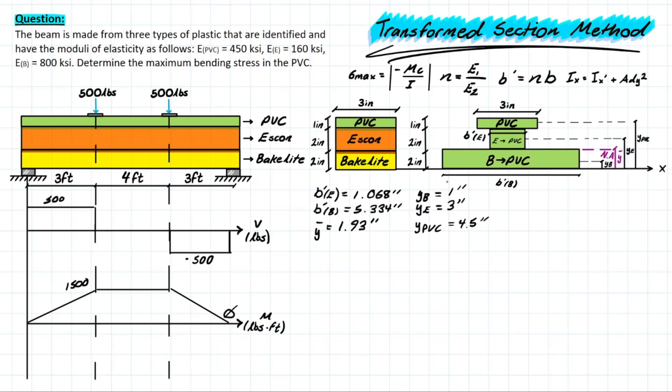Now that we're cleaned up here, we can take a look at the inertia value for this transformed section. And we're going to proceed with the parallel axis theorem. So we have 1 over 12, starting with the bakelite. We have this B' for the width, which is 5.334, times the height, which is 2, and that's going to be to the power of 3. Now we add the area for that section, so 5.334 times 2. And now we need the distance between the neutral axis and this YB value. And that's simply going to be 1.93 minus 1, and that's going to be squared.